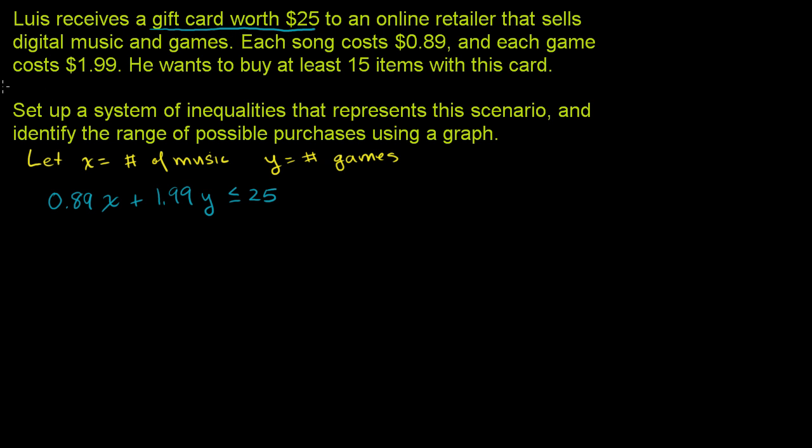The second constraint is that he wants to buy at least 15 items with his card. So the number of songs plus the number of games has to be at least 15. So x + y ≥ 15. And just like that, we have our two constraints. We've set up the system of inequalities that represent the scenario.